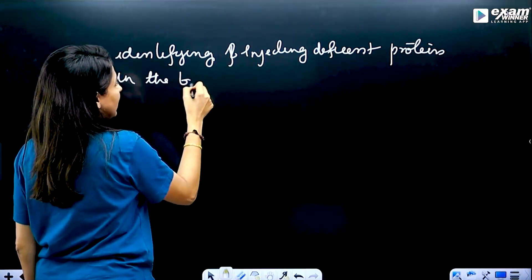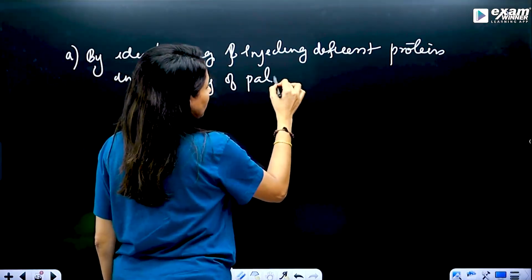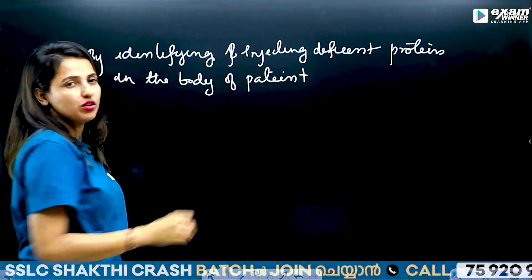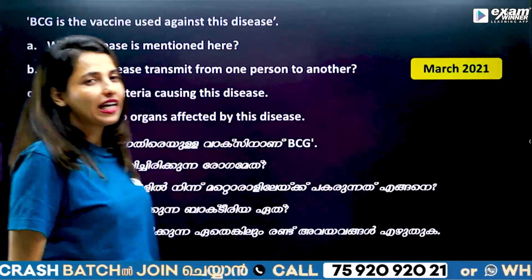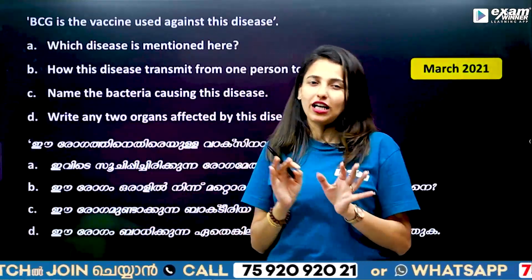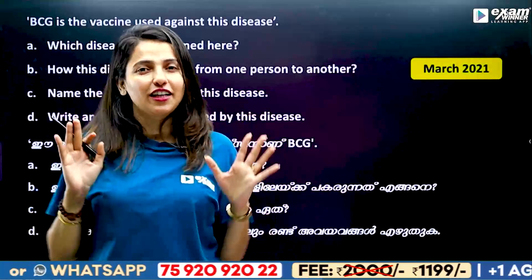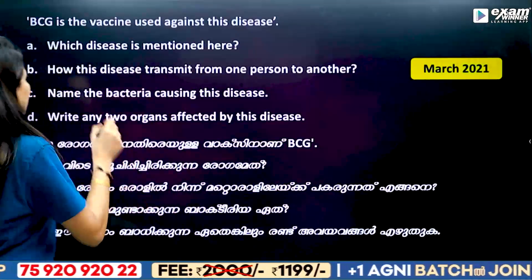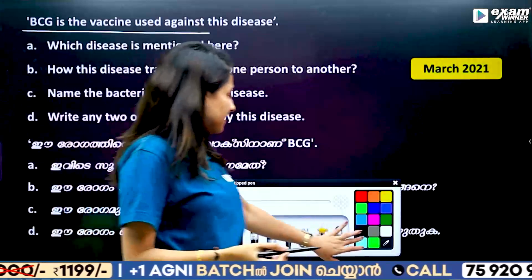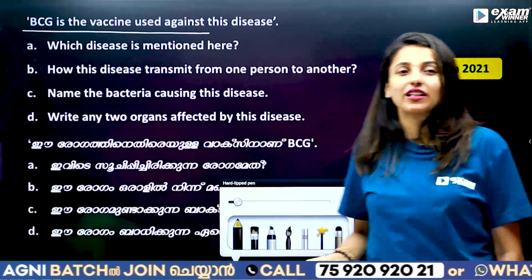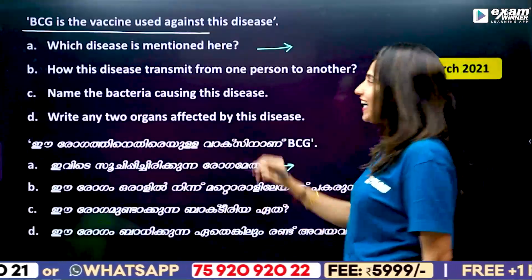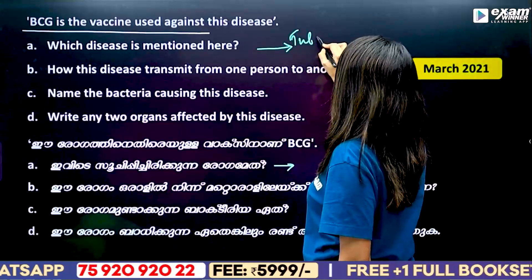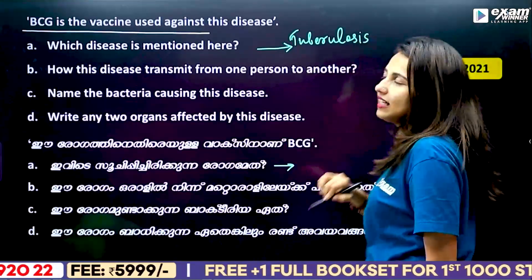We identify and inject the deficient clotting protein into the body of the patient. Because it is a genetic disease, this is only temporary relief. Another question: BCG is the vaccine used against which disease? BCG is used against Tuberculosis.